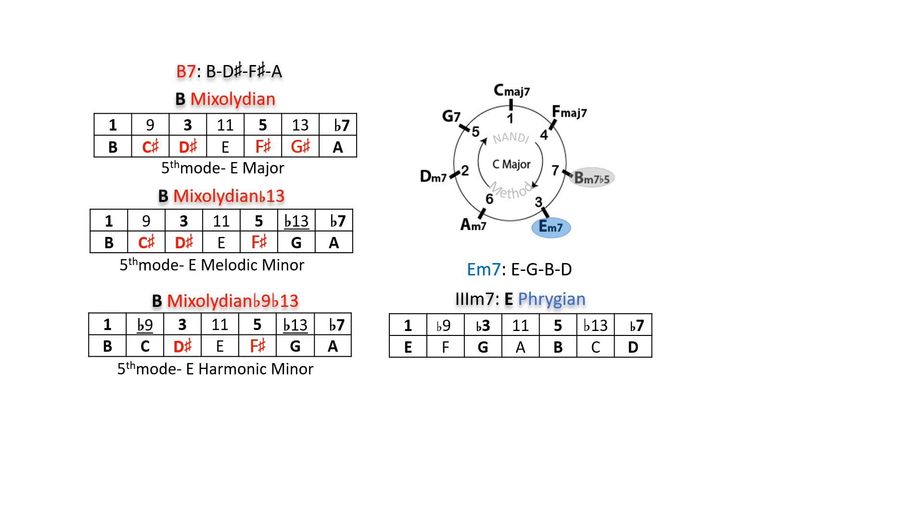B7 is the 5-7 of E minor 7. B mixolydian from E major, B mixolydian flat 13 from E melodic minor, and B mixolydian flat 9, flat 13 from E harmonic minor have too many notes that differ from E phrygian or C major.